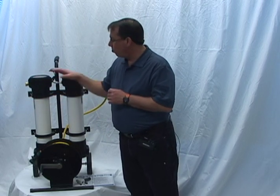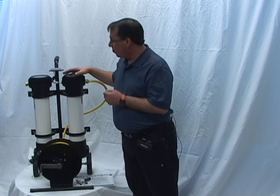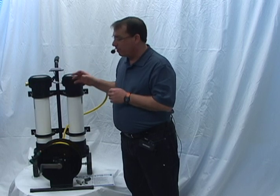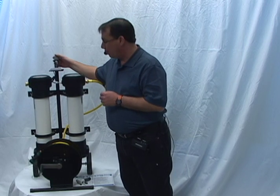We have two 4 inch by 21 inch DI mixed resin DI cartridges in here. It's basically going to take whatever tap water you put in and filter that water out to absolute purity.